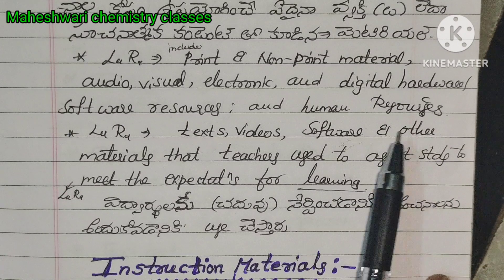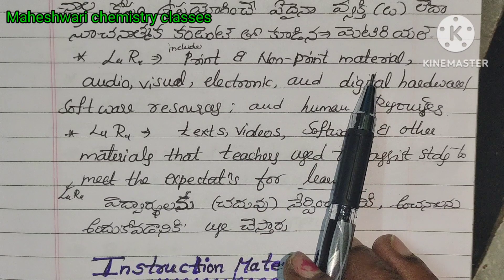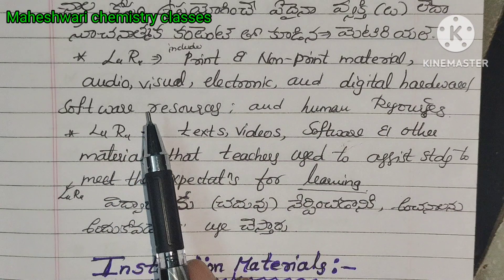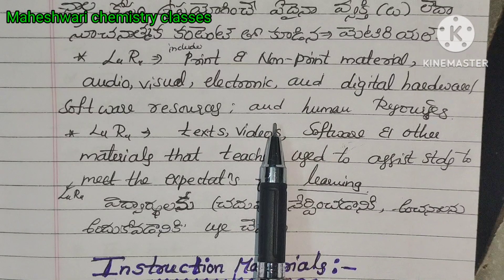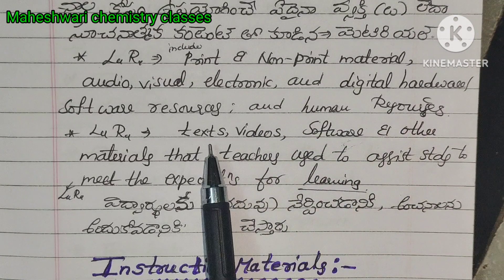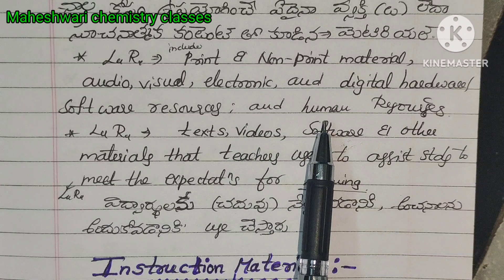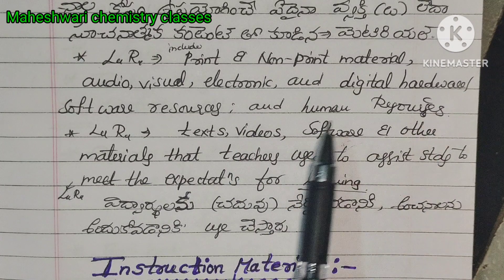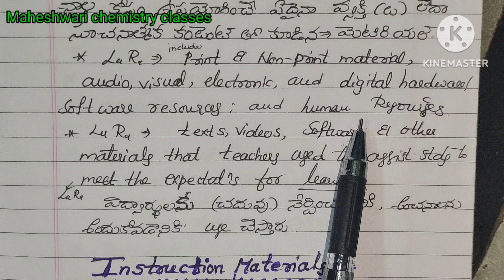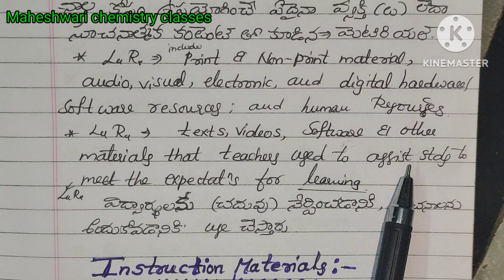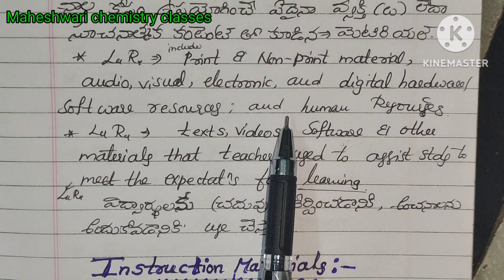These include printed materials, audio, visual, electronic materials, digital hardware, and software resources. There are also human resources — friends, teachers — with higher knowledge percentage. All these are considered as learning resources.